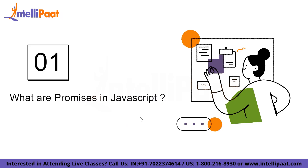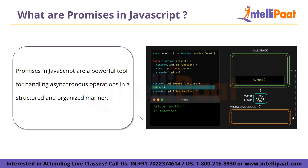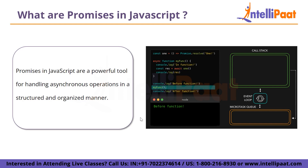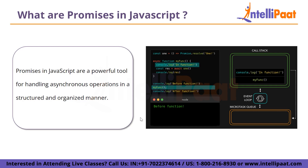A promise represents a value that might be available now, in the future, or never. It has three states: pending, fulfilled, and rejected. The promise begins in the pending state and transitions to either fulfilled or rejected once its associated asynchronous operation completes.